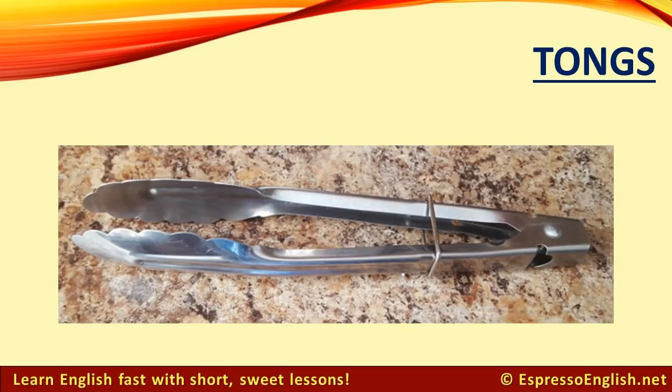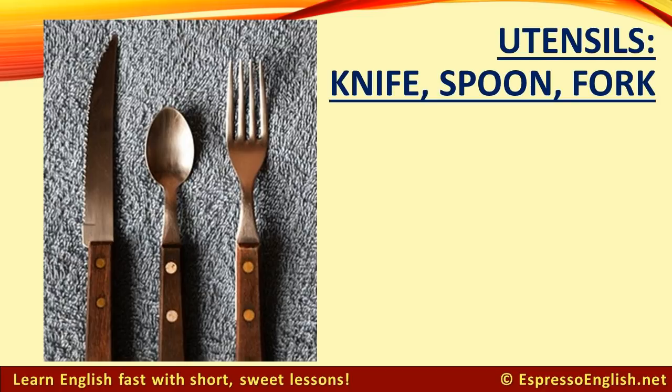Tongs. You can use tongs to pick up food. Utensils: knife, spoon, fork. You use a knife, spoon, and fork to eat food. Together, these items are called utensils.